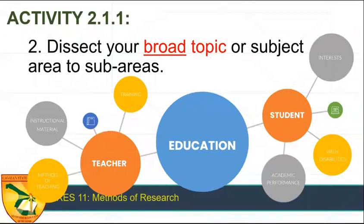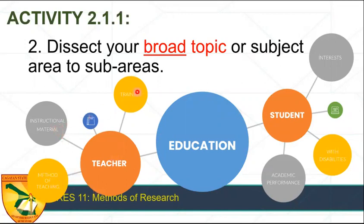So for activity 2.1.1 number two, dissect your broad topic or subject area to sub-areas. Since I chose education for number one, these are my sub-areas — they need not be comprehensive. So I chose teacher and student. For teacher, I can look into their method of teaching, instructional materials use, and training. For students, I can look into their academic performance, students with disabilities, and student interest.